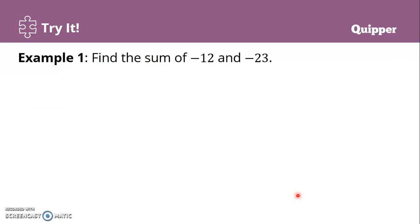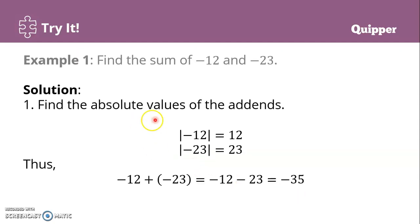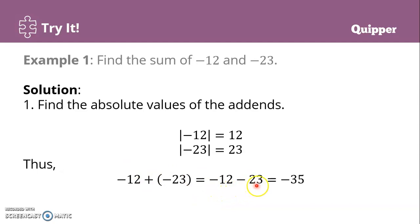Another example: find the sum of negative 12 and negative 23. Find the absolute values of the addends. The absolute value of negative 12 is 12, and the absolute value of negative 23 is 23. So we have negative 12 plus negative 23. The plus and negative signs become negative, giving us negative 12 minus 23. Common sign is negative, so we add 12 and 23 to get 35. The answer is negative 35.